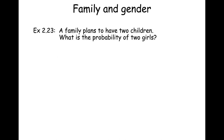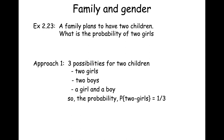Consider a family planning to have two children. You might ask — maybe as a geneticist — what is the probability of having two girls? There seem to be three possibilities: two girls, two boys, or a girl and a boy, which would suggest a probability of one-third. But that is not correct.